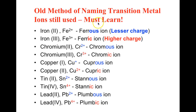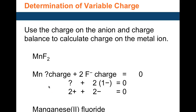There is an old method of naming transition metals that you must learn because it is still used today. Iron 3+ is called ferric — the higher charged ion gets the '-ic' suffix. Iron 2+ is ferrous — the lesser charge gets the '-ous' suffix. Similarly, copper 1+ is cuprous and copper 2+ is cupric.